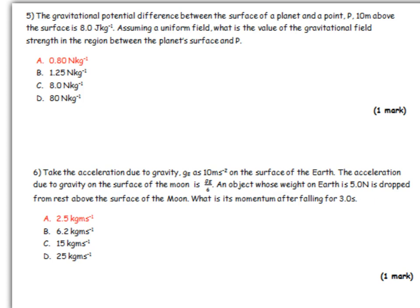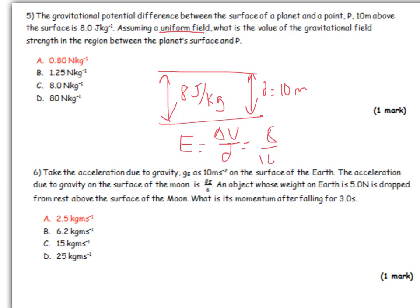The potential difference in terms of gravity between the surface and a point B 10 meters above the surface is 8 joules per kilogram. Assuming it's a uniform field, what is the value of gravitational field strength? We've got two points, we know the potential difference is 8 joules per kilogram, and the separation d equals 10 meters. So E equals ΔV over d, which is 8 divided by 10, gives you 0.8 newtons per meter squared to the minus 1, which is the first one. Nice and simple.